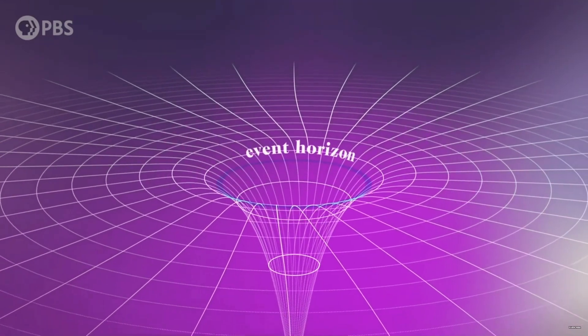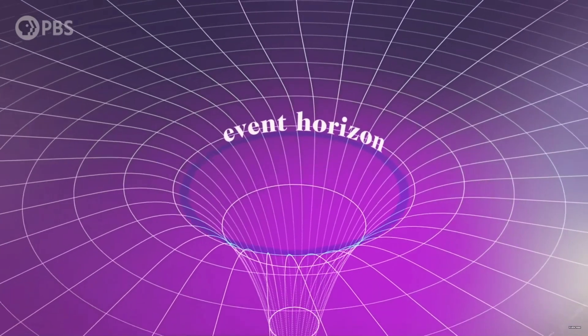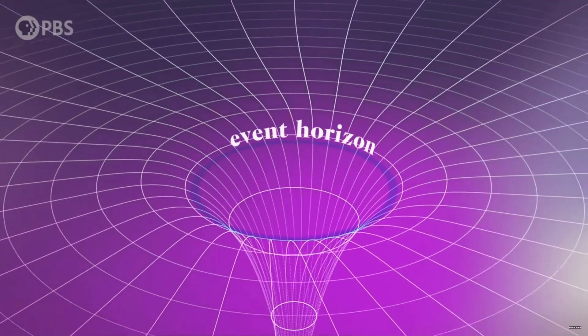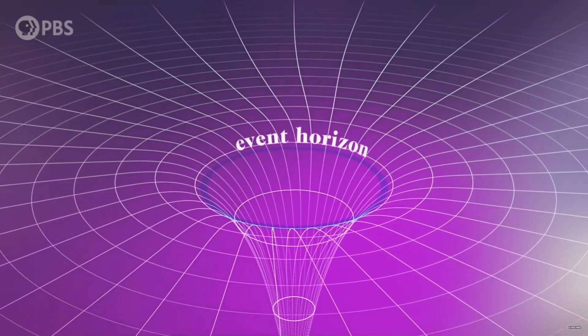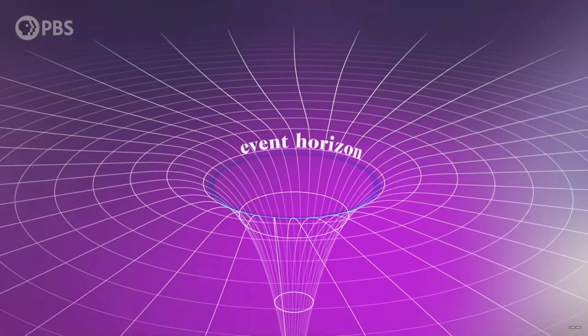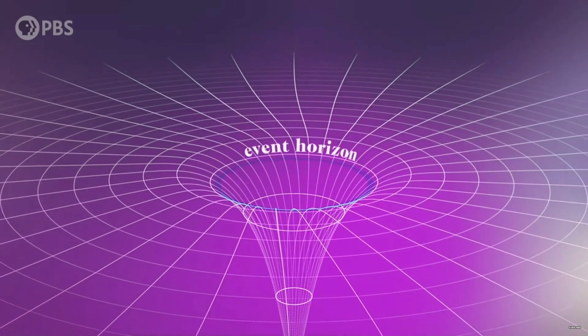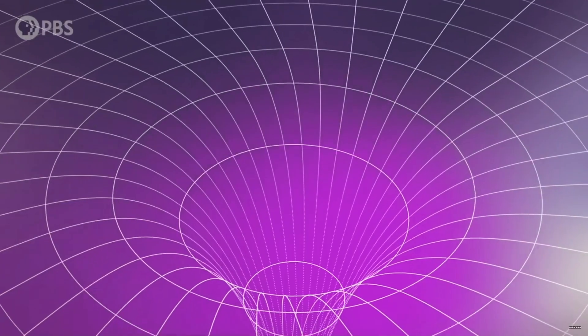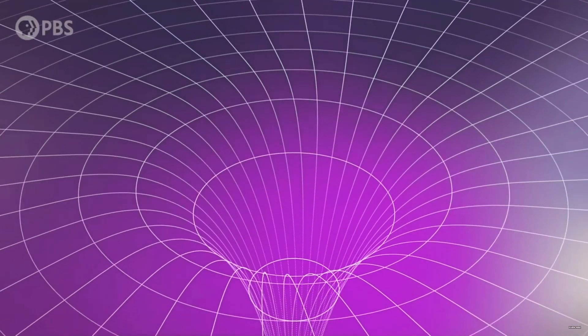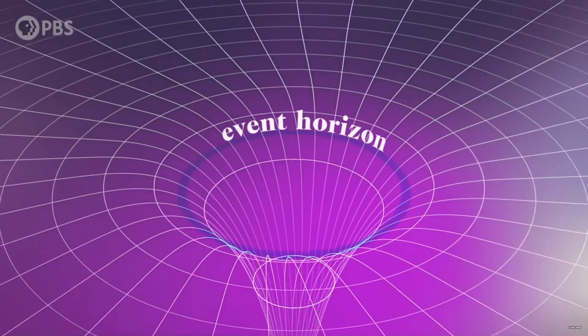But why can't light escape? Light is made up of tiny, wave-like particles known as photons. But these photons don't have mass. So how could a black hole pull on one, even with its immense gravitational pull? And how is something traveling at the speed of light not able to escape with ease?